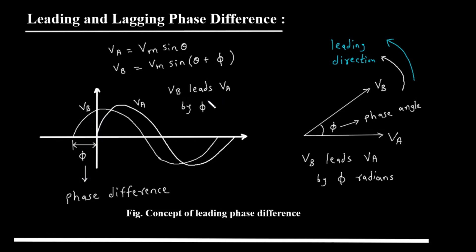Mathematically, if VA is described by the equation VA equals Vm times the sine of theta, then VB would be described as VB equals Vm times the sine of theta plus phi. That plus phi is the mathematical way of saying it's shifted to the left, or ahead in phase. Now look at the phasor diagram on the right — it's much simpler. We draw the phasor for VA along the horizontal reference axis. Since VB leads VA by an angle of phi, we draw the phasor for VB at an angle of phi counterclockwise from VA. Counterclockwise is the leading direction, so the phasor diagram clearly shows that VB leads VA by phi radians.